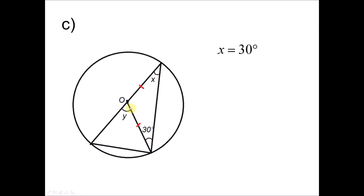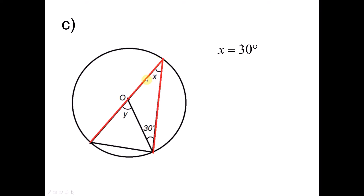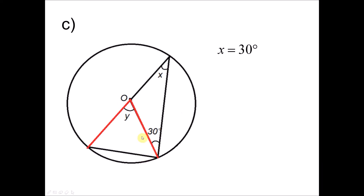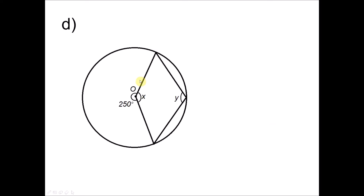To find Y, notice that Y is the angle at the center and X is the angle at the circumference, both subtended by the same minor arc. According to the property, the angle at the center is twice the angle at the circumference. So Y equals 2 times X. Since X is 30°, Y equals 60 degrees.